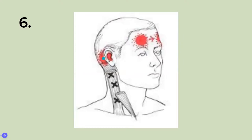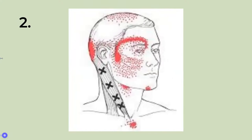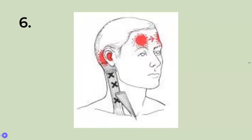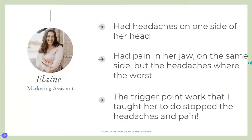Number five is similar to four but with the pain coming out more toward the cheekbone. Number six is ear pain and a headache that goes across the forehead. Let me know in the comments — whether you're on Facebook, YouTube, or Zoom — which of these applies to you. It can be more than one; it's very common to have more than one, so feel free to write multiple numbers.